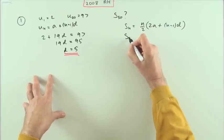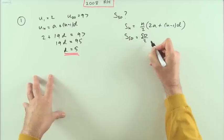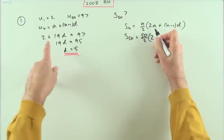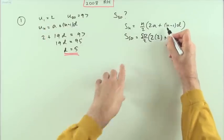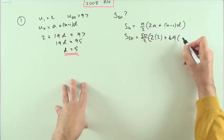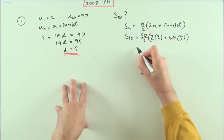Then I can work out the sum of the first 50 terms. There are 50 terms, so that's 50 over 2. a was 2, so it's 2 times 2. If n is 50, n minus 1 is 49, and the common difference was 5.